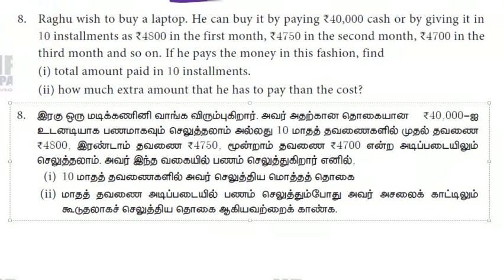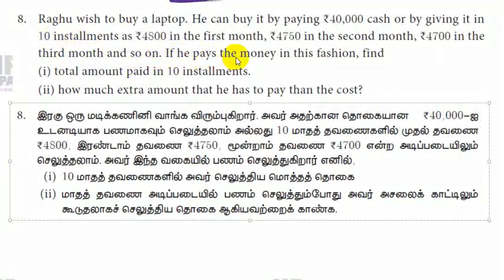Now we are going to discuss number 8 from exercise 2.6. Rahu is to buy a laptop. He can buy it by paying 40,000 cash or by giving it in 10 installments: 4,800 in the first month, 4,750 in the second month, 4,700 in the third month, and so on. If he pays the money in this fashion, find: sub-question 1 - total amount paid in 10 installments, sub-question 2 - how much extra amount he has to pay than the cost.